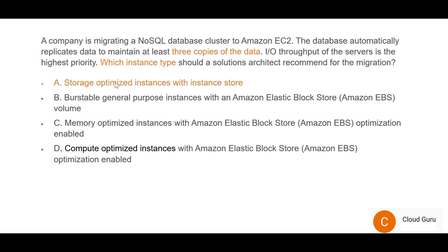Let's also investigate options B, C, and D. Burstable GP instance — as the name suggests, the load is not consistent: it sometimes bursts and peaks, sometimes it's low. The question doesn't explain any such scenario; it's only talking about three copies of data. Hence B is wrong. An example of where burstable instances work well is Uber — sometimes during the day bookings spike unexpectedly, so a burstable instance would be lucrative for that scenario, but not here.